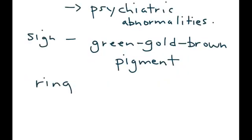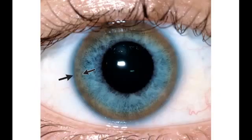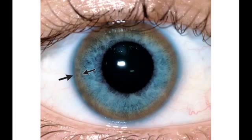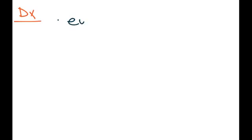An important physical exam finding is something that you see in the eye — a green, gold, or brown pigment described as a ring around the rim of the cornea and iris. Here is a photo of this very prominent ring around the rim of the cornea and iris. It is known as a Kayser-Fleischer ring, and it is pathognomonic for Wilson disease.